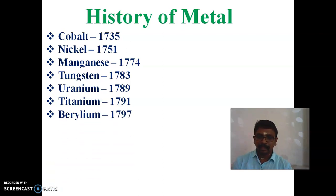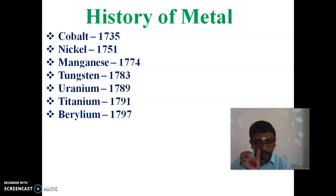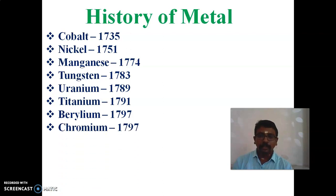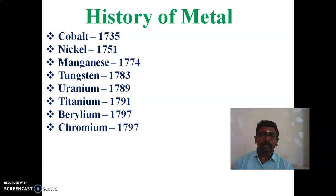Beryllium — the symbol for beryllium is Be, introduced in the year 1797. And chromium was also introduced in 1797. The symbol for chromium is Cr.